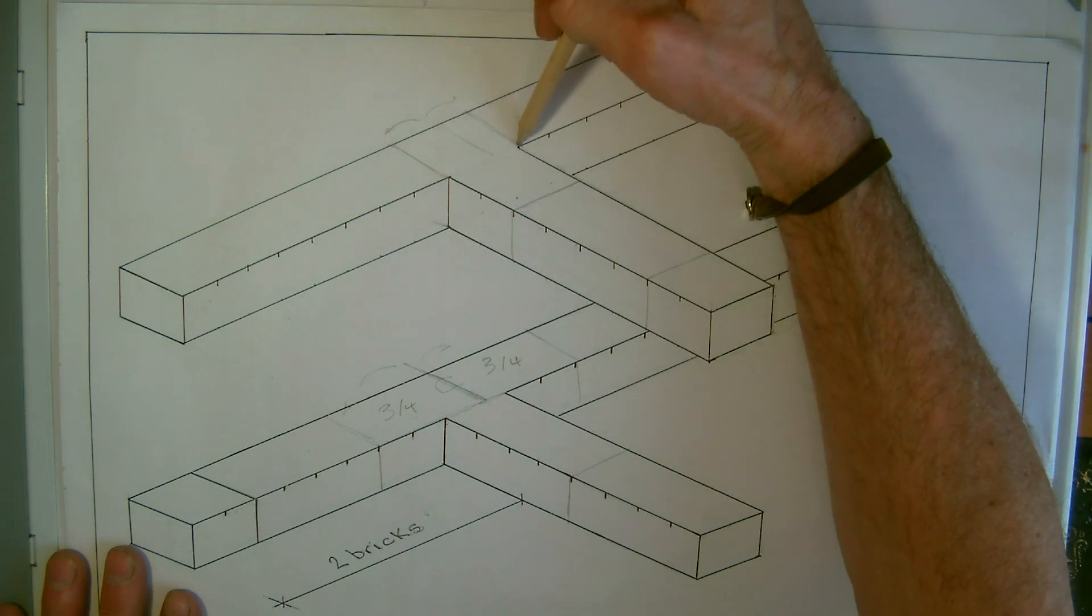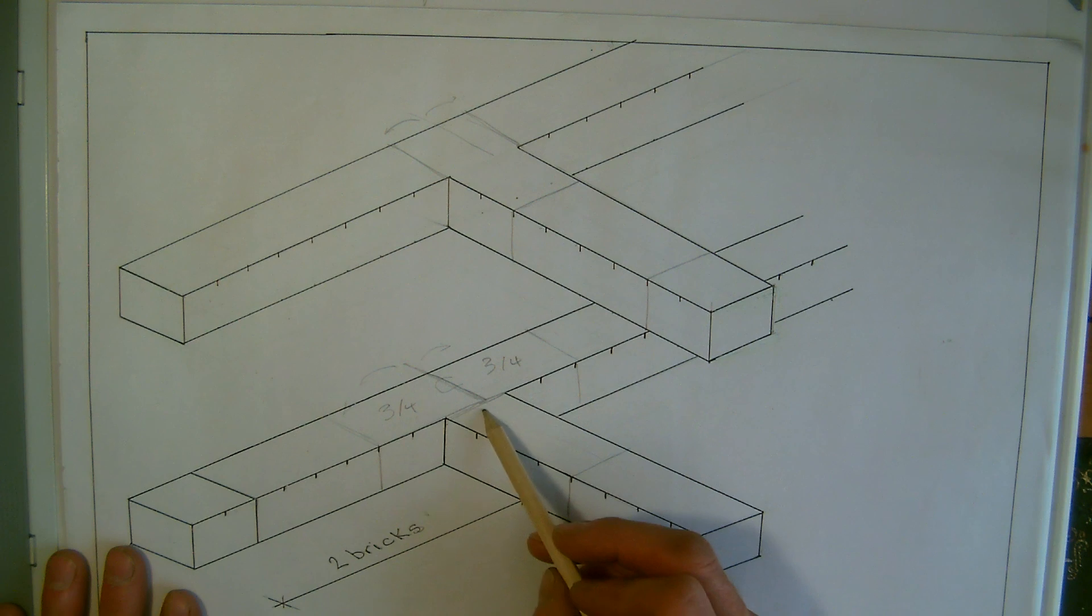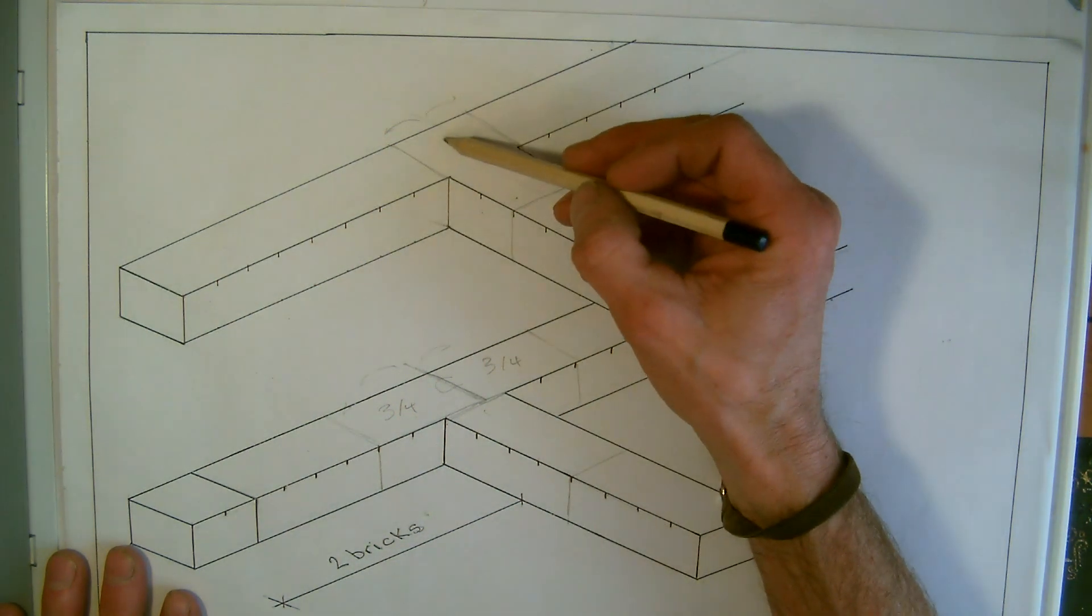Again, if we just remember what we said right at the start, the rule here is this one will butt up, so that means this one must tie across.